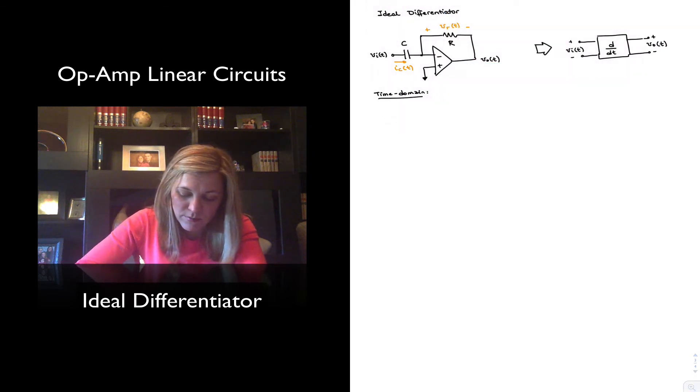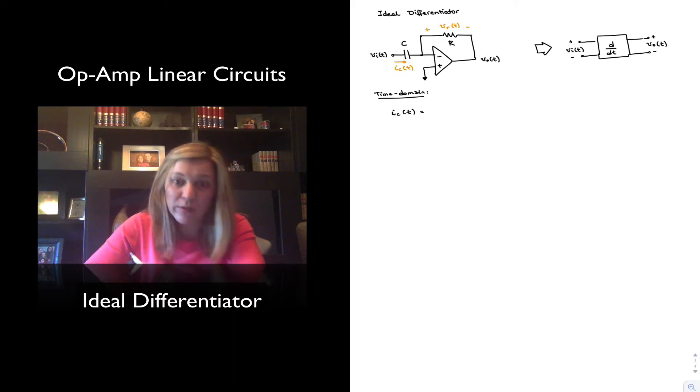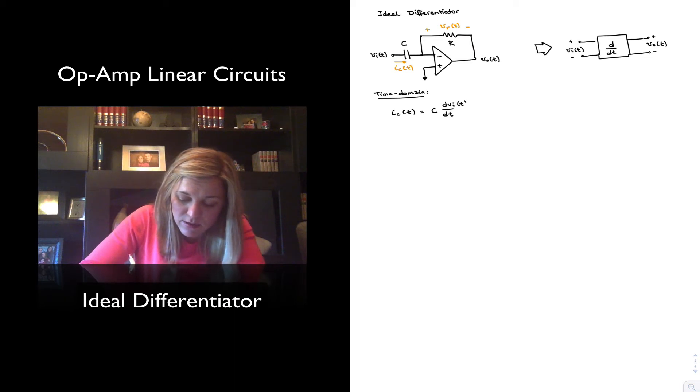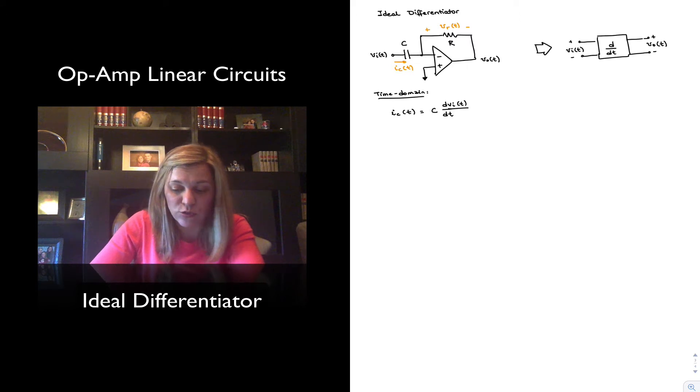Now, my current IC as a function of time is the current through a capacitor. And the relationship between current and voltage for a capacitor is that I is equal to C dV/dt. And obviously, that dV will be Vin because the other side of the capacitor is sitting at the virtual ground.